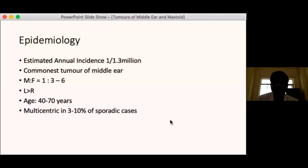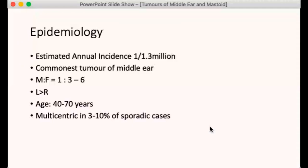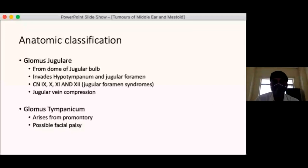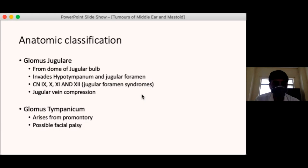In familial cases multicentricity is much more common, but in sporadic cases only about 3% of tumours are multicentric. Based on the location or origin of the tumour, we can have an anatomical classification into glomus jugulare and glomus tympanicum. The glomus jugulare arises from the dome of the jugular bulb and invades the hypotympanum and jugular foramen. Cranial nerves 9, 10, 11 and 12 can be involved.